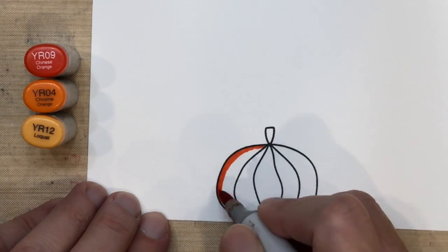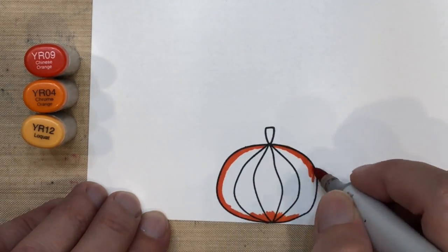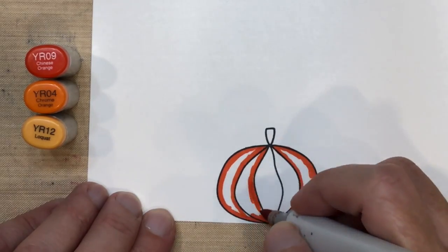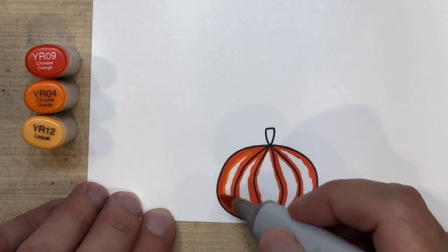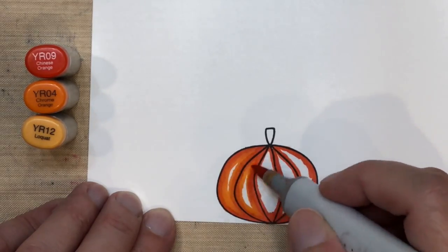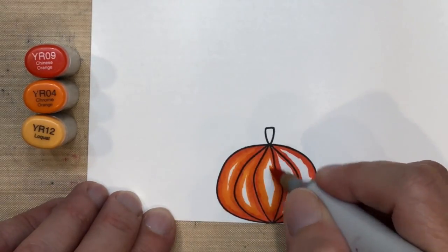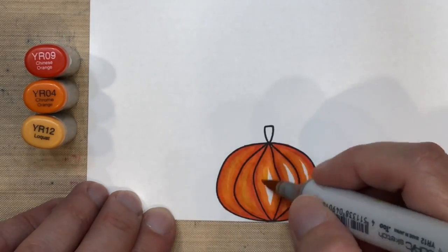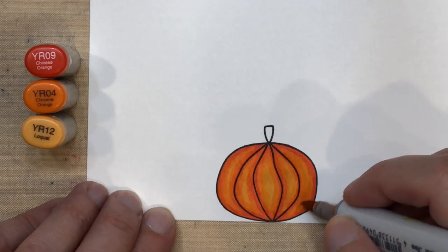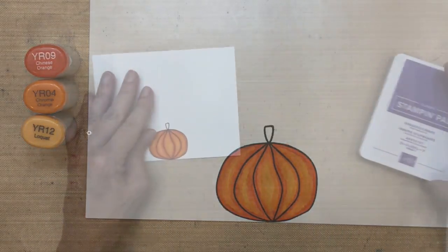I'm going to go ahead and color my pumpkin now. I'm using Copic markers. I'm going to use the darkest color along the outside and also color to the right and left of all these pumpkin lines. Then I'll take my medium color YR04 and move toward the center, and finish it off by coloring everything with the YR12, a really light orange color.